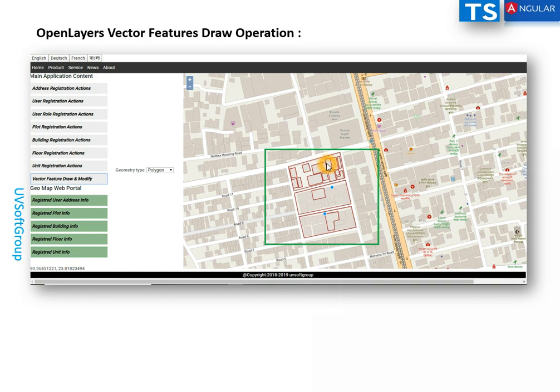All 12 buildings have to be stored in the database, and the plot is linked to those buildings.